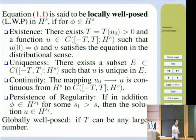The second one is uniqueness. The third one is continuity. The solution flow from initial data to the solution is continuous. And the fourth is persistence of regularity. If these four conditions are satisfied, then we say it is locally well-posed. But if t could be any large number, then we say it is globally well-posed.